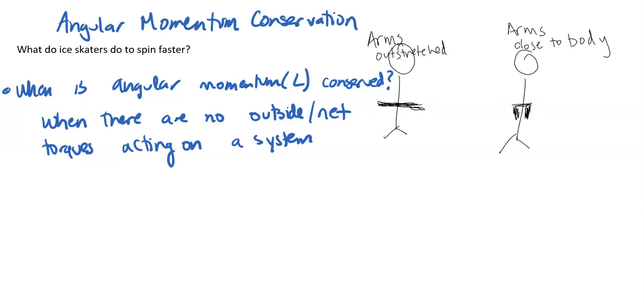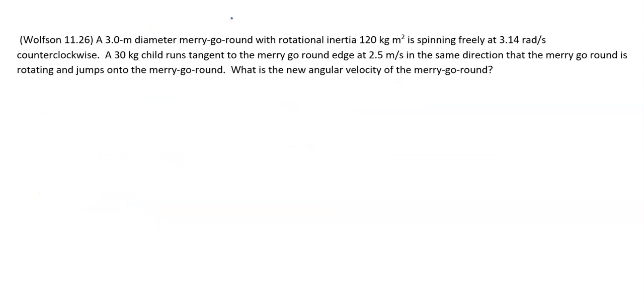Okay, so the equation for angular momentum conservation is just L initial equals L final. This is the sum of all the initial angular momentum equals the sum of L final, and it will be conserved. We're going to solve one example problem together now using this idea.